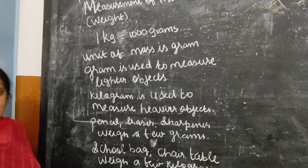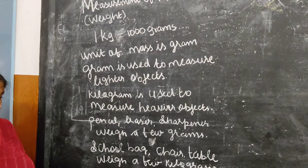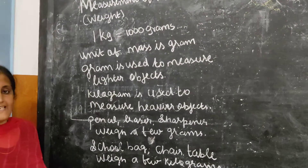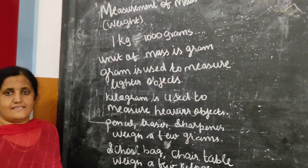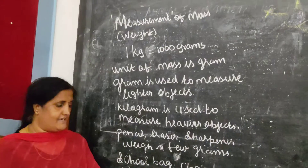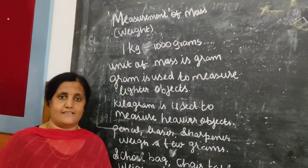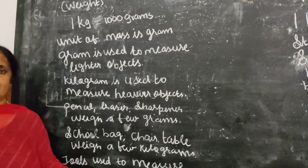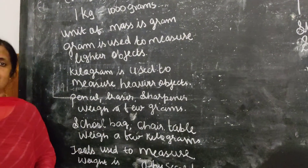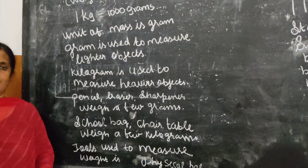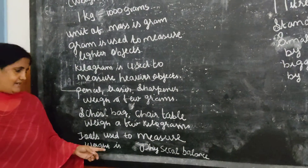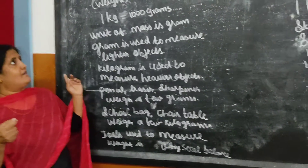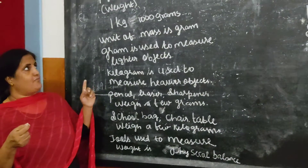The tool used to weigh objects is the physical balance. These weights are all measured using a physical balance. Do you know what a physical balance is? It is used to weigh things. This is what we use in measurement of mass.